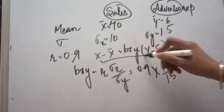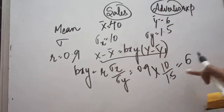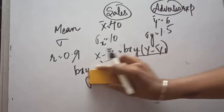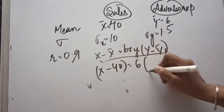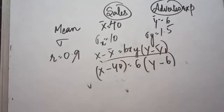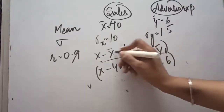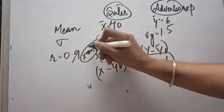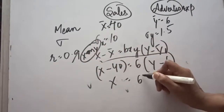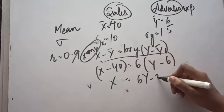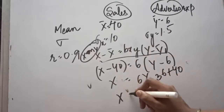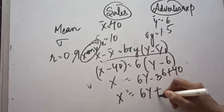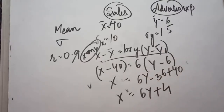Once we have calculated bxy = 6, we can fill the values into the equation since the means are already given. So x minus x mean (40) equals 6 times (y minus y mean (6)). Keeping x on the left-hand side, we get x = 6y minus 36 plus 40, which simplifies to x = 6y + 4.